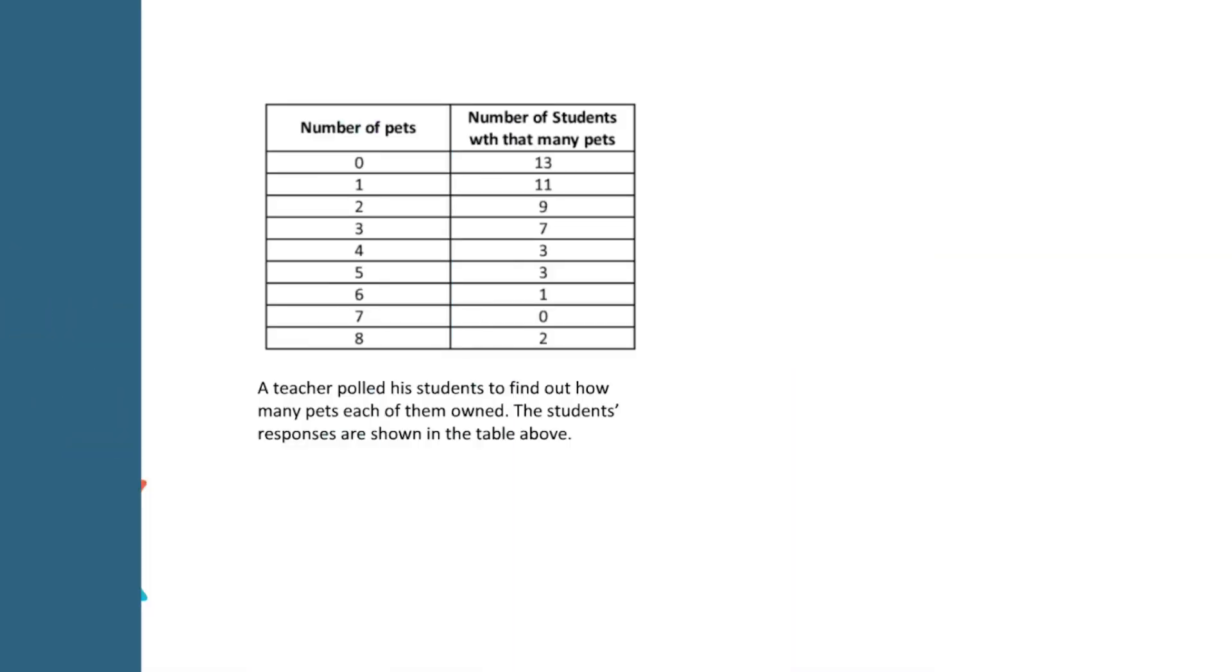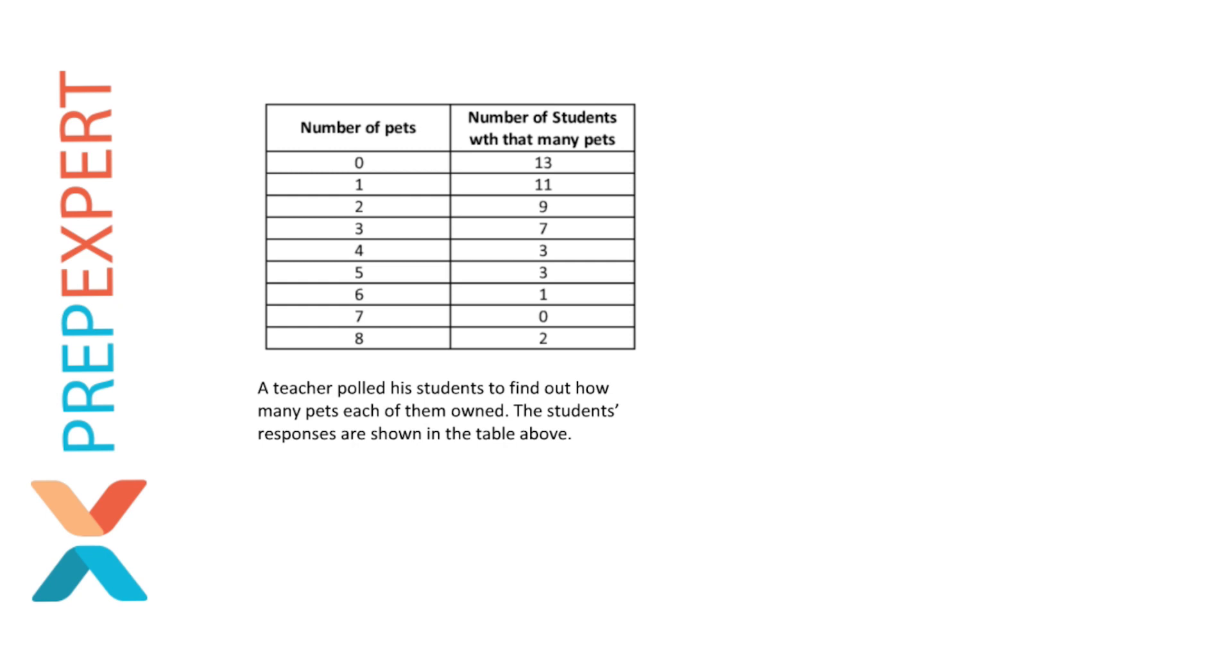In order to talk about a histogram table, it's important first that we understand what it means. The histogram table is the term I use to describe a table like the one you see here on this page. In this table, what we have is a set of values indicated in table form. So this is really a data set. It's just a data set that the test makers aren't showing us, or at least they're not showing us all written out.